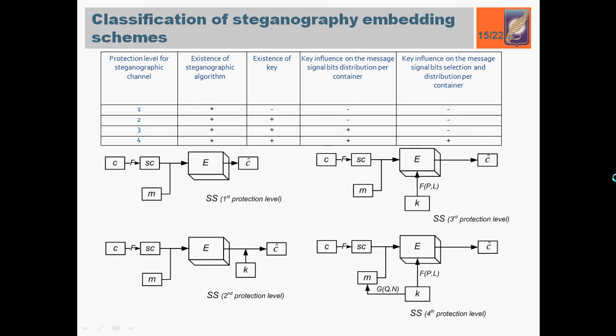There are four security key schemes that provide different levels of security or stability of steganography channel. The first lowest protection level is provided only by using embedding algorithm. The second protection level requires using the key without influence on embedding algorithm or bits distribution. The key can be inserted, for example, in the beginning or end in a caption of a host signal. The third protection level, the key influences on a message signal bit distribution within the whole container. And a fourth, in addition to the third scheme, the key influences on a bit selection from a message.